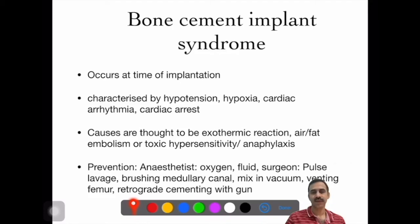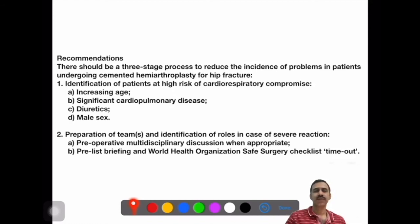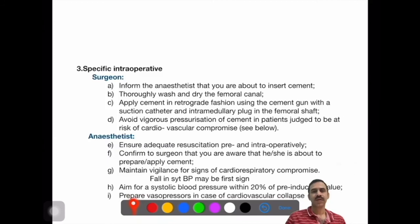The prevention measures should be from the side of the anesthetist and the surgeon. The anesthetist should oxygenate, hydrate, and monitor the patient. The surgeon should use pulse lavage, brush the medullary canal, mix the cement in vacuum, bend the femur, and attempt retrograde cementing with the gun. There is a recommendation for a three-stage process to reduce the incidence of problems in patients undergoing cemented hemiarthroplasty for hip fractures: proper identification, preparation of the team, and specific operative procedures.